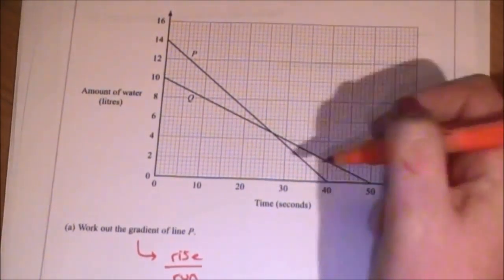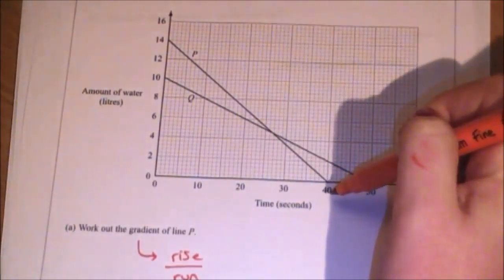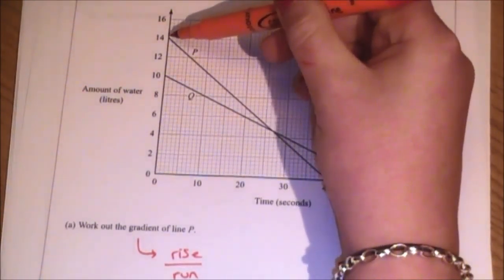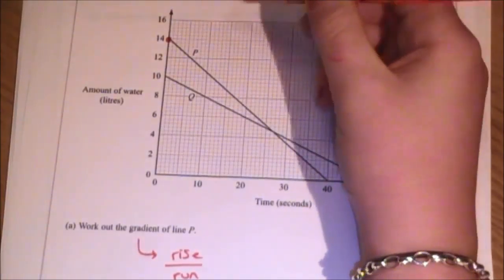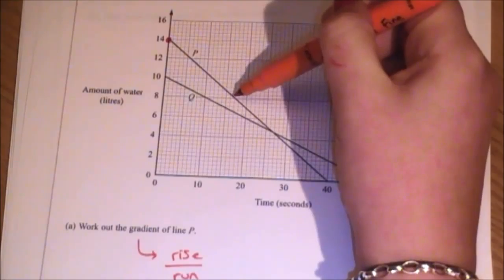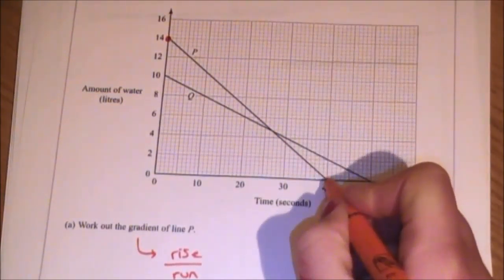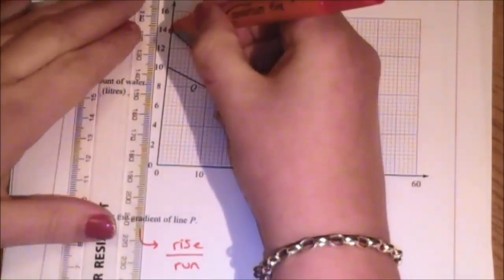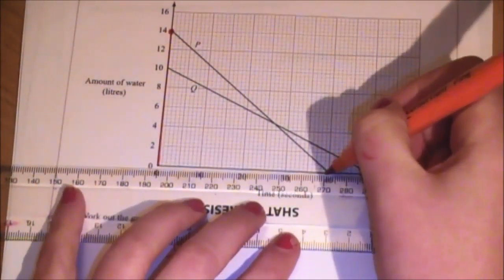Now, in order to get the rise and run, you need to draw a right angle triangle from two points on the line that cross over the two solid lines on the axis. I'm going to start there and look. There's one solid point. They're all falling randomly on the grid. Actually, my only two solid points are at the start and end of the line, which makes life a bit easier. So I'm going to draw that triangle in.